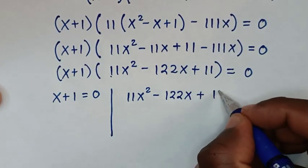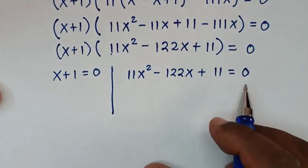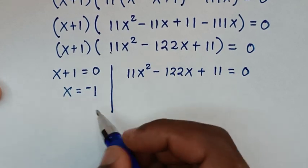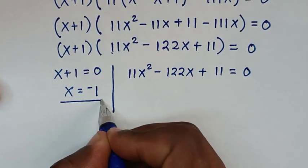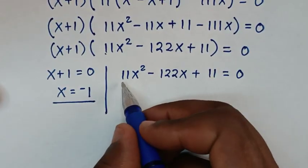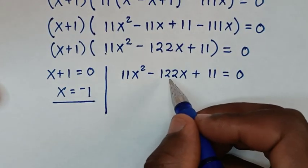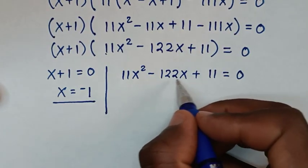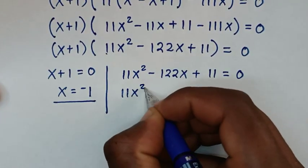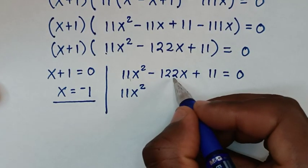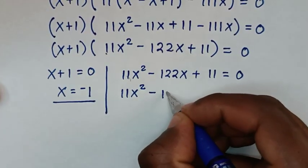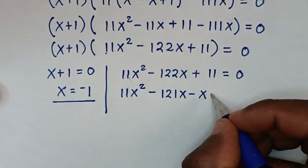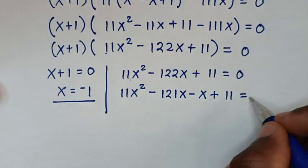From here we have two factors equal to zero. The first solution is x plus 1 equals 0, and the second is 11x squared minus 122x plus 11 equals 0. To solve this quadratic by grouping and factorization, we split negative 122x as negative 121x minus x, since the sum is negative 122x.